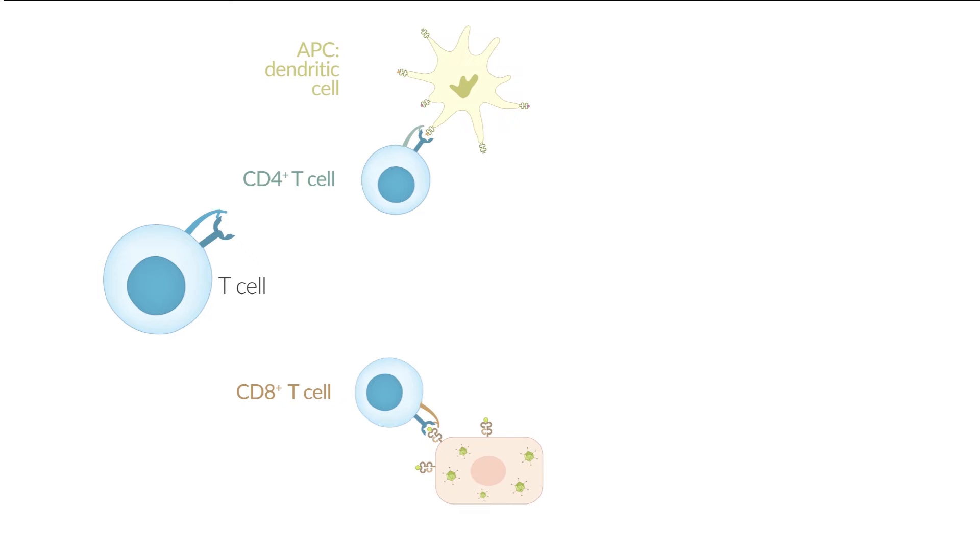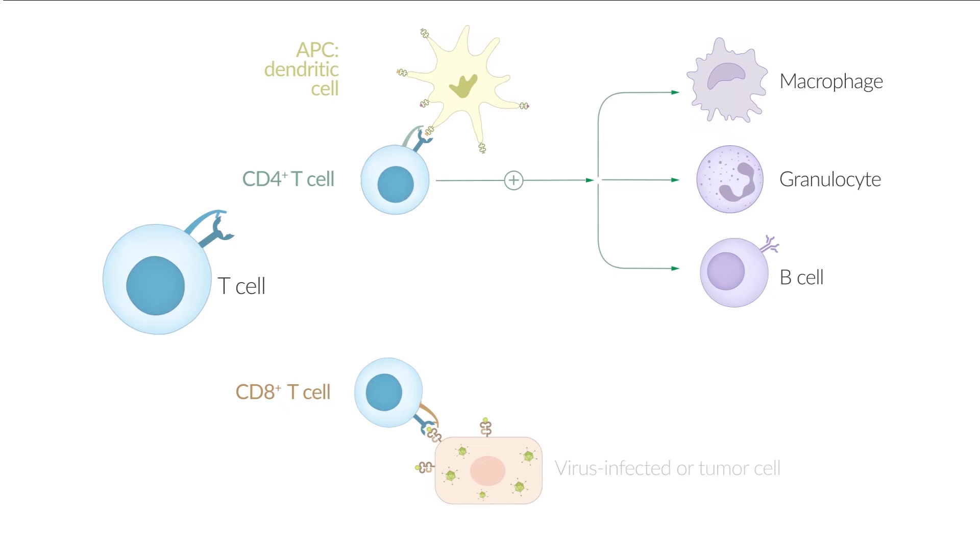CD4-positive T cells are also called T helper cells. They activate macrophages and granulocytes or help to activate B cells. CD8-positive cytotoxic T cells kill virus-infected or tumor cells.